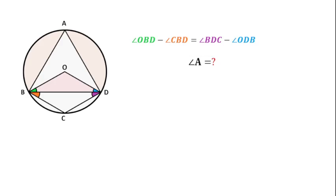Welcome to Definite Mind. In this question there is a circle and it is given that the difference of angle OBD and angle CBD is equal to the difference of angle DC and angle OBD — that is, the difference of the green angle and orange angle is equal to the difference of the blue angle and purple angle. We have to find angle A.